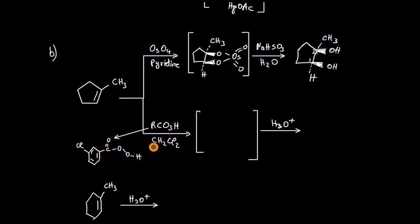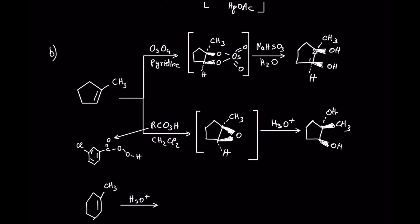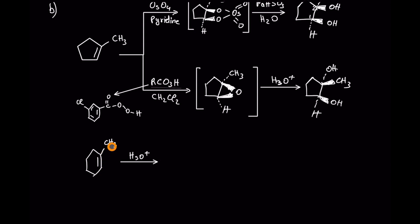If we use meta-chloroperoxybenzoic acid we are going to yield the trans diol. If you want to name this one, it is trans-methyl-1,2-cyclopentandiol.